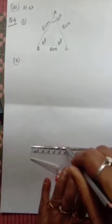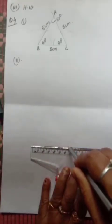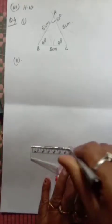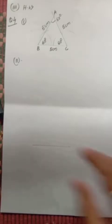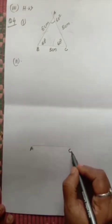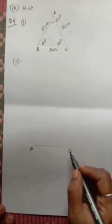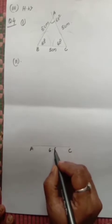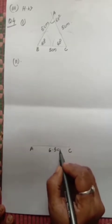In an isosceles triangle, base angles are always equal. If one base angle is 60°, the other is also 60°. Adding three angles gives 180°, so the vertex angle is also 60° — making it an equilateral triangle.